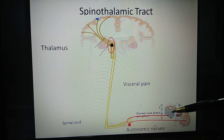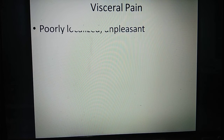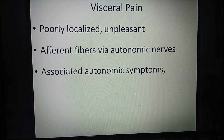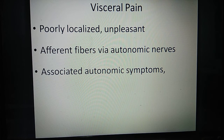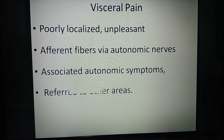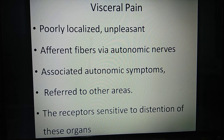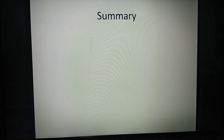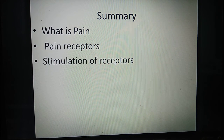This is a peculiar feature of visceral pain: it is poorly localized, unpleasant, carried by autonomic afferent fibers, and thus associated with autonomic symptoms like sweating, change in blood pressure, palpitations, and diarrhea. It is also referred to other areas due to innervation from the same spinal segment, and receptors are sensitive to distension of organs. This concludes our discussion of pain: pain receptors, stimulation of receptors, and types of pain.